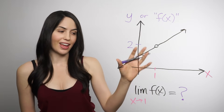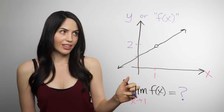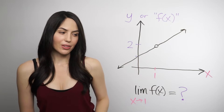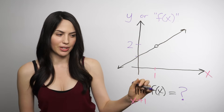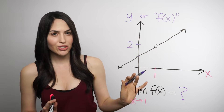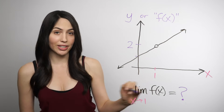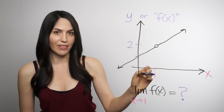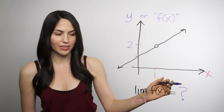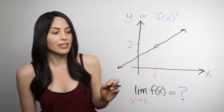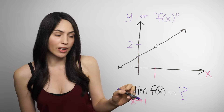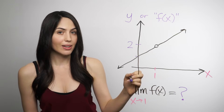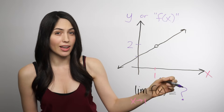Look at this graph and this limit question. The graph's a little strange — it has a hole in it, a gap — but that's completely possible. What does this limit notation mean when you see this? Well, officially and technically, how you read this is: the limit as x approaches 1 of f of x equals some number. That means when x gets really close to 1, what is y getting really close to? And the limit — the answer for the limit — is always a y value.